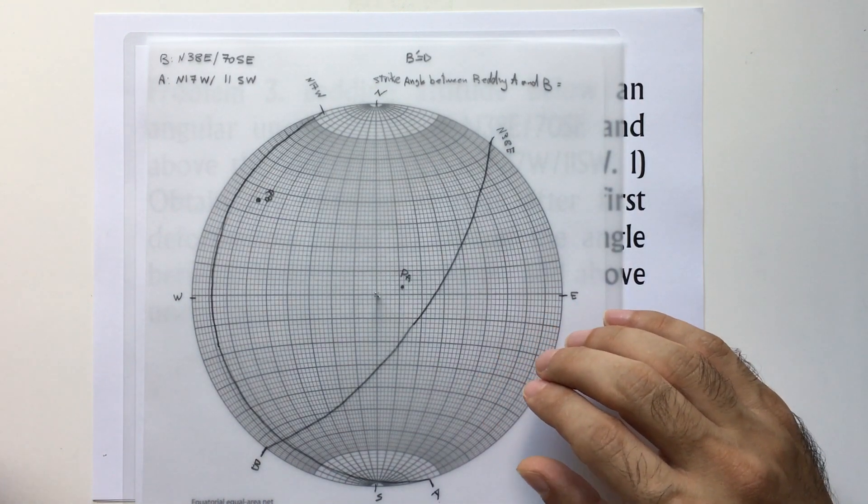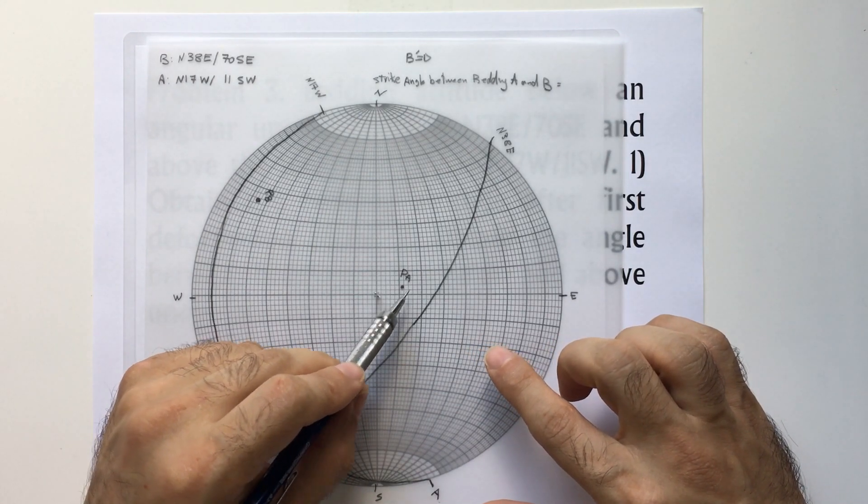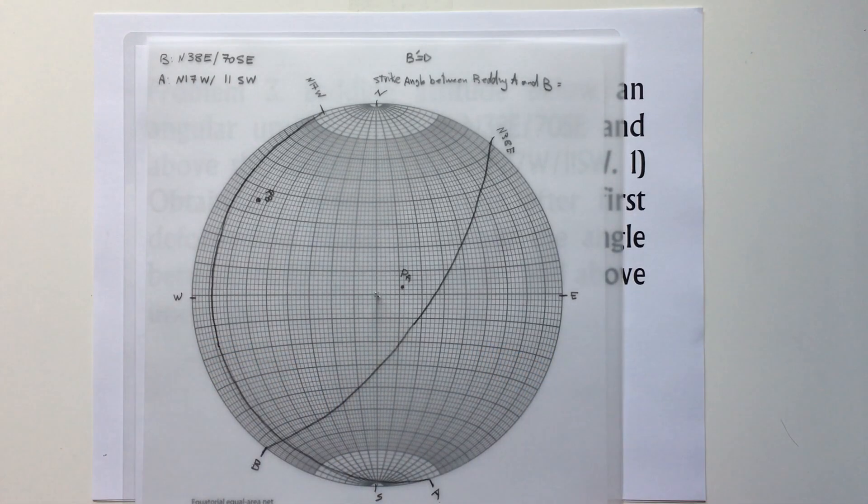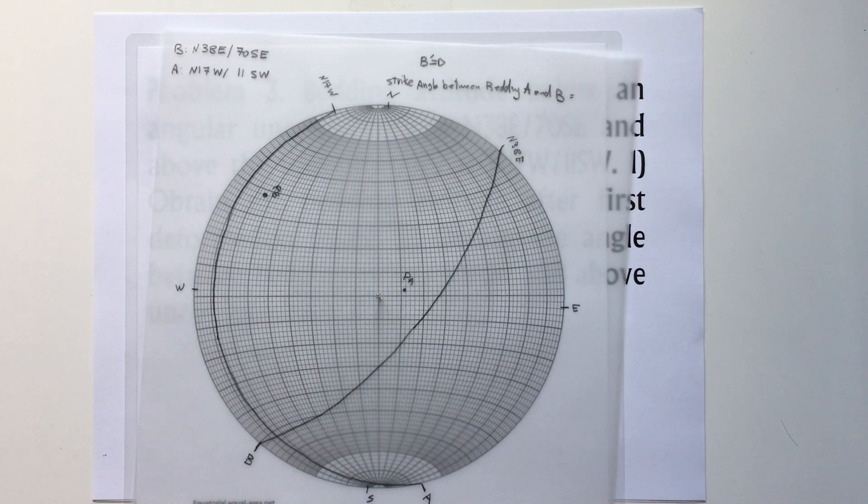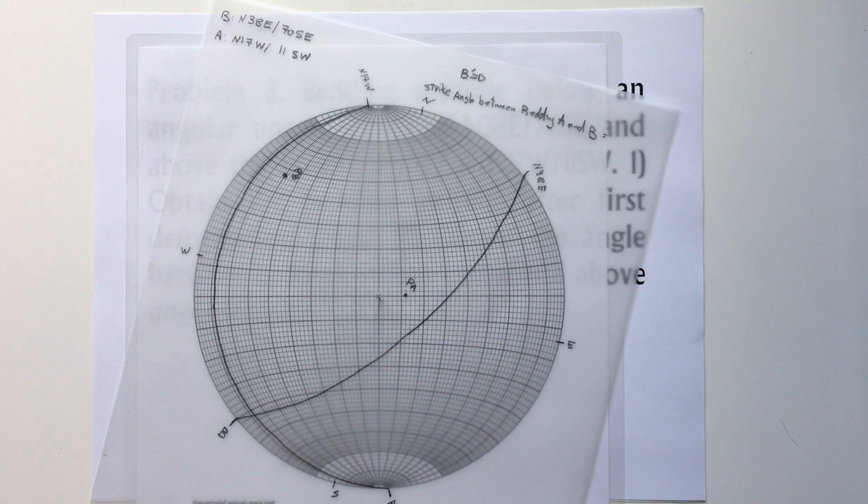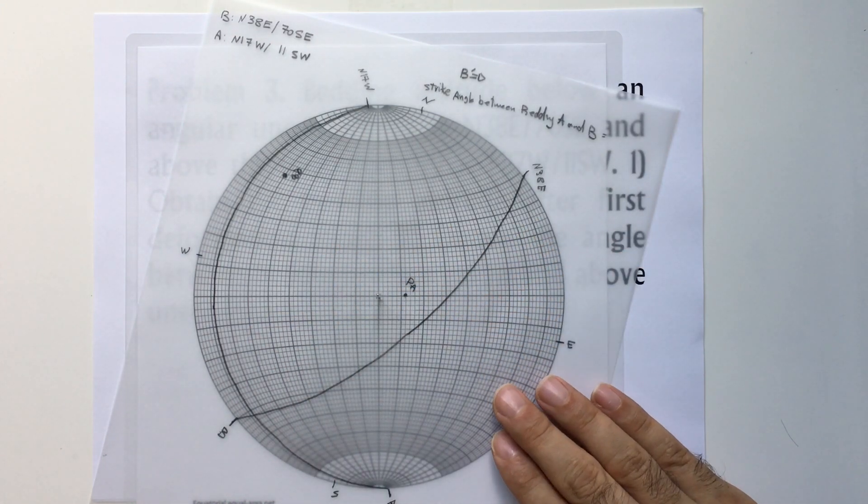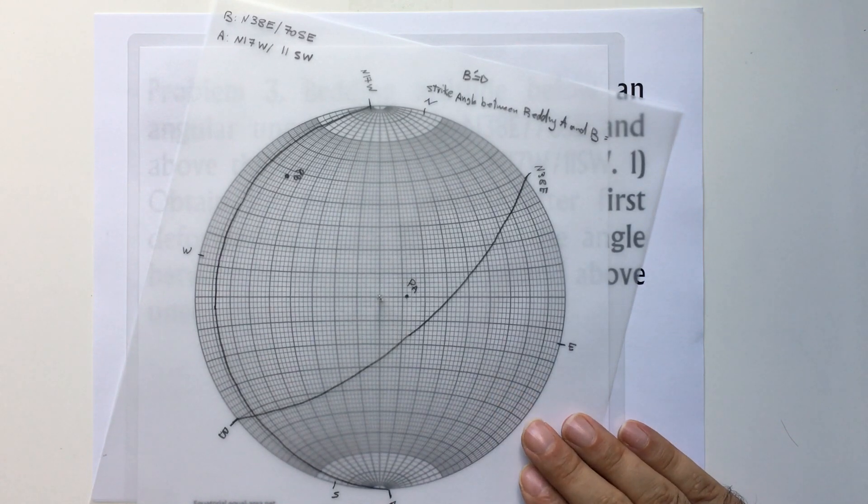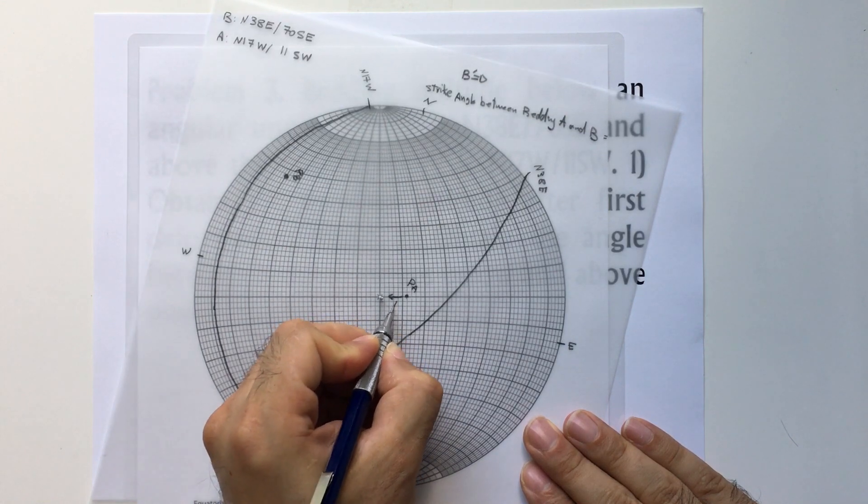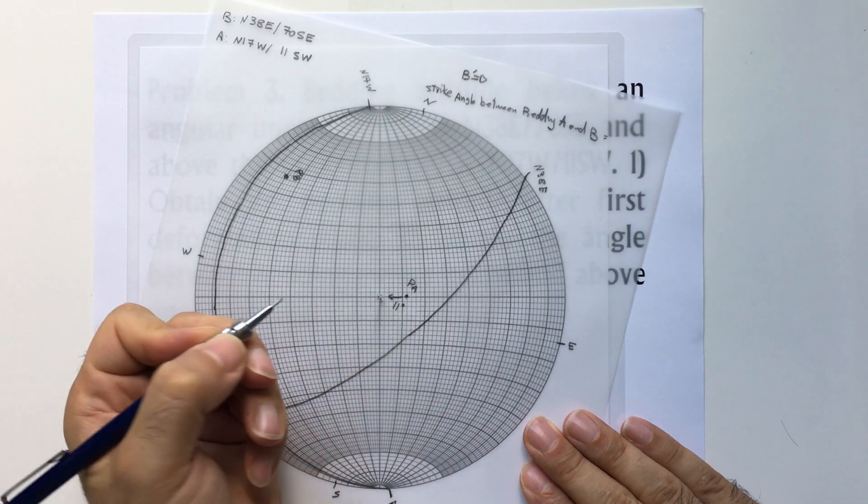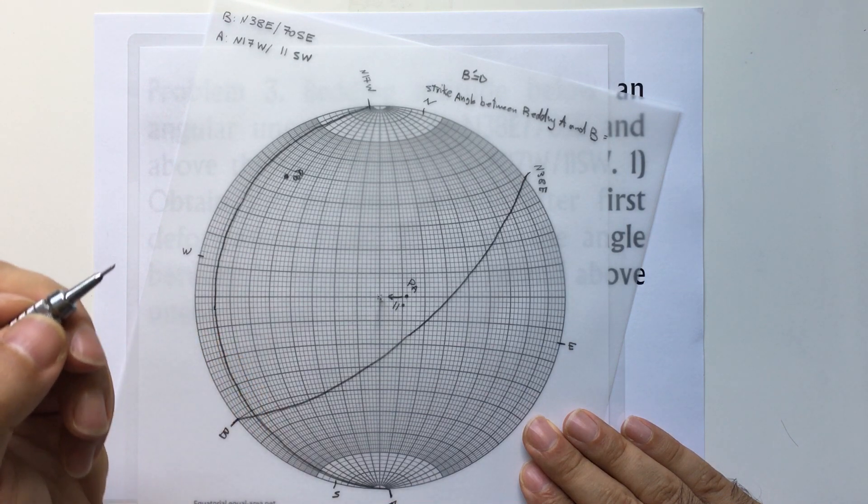So we're going to move the pole of A, the above bedding, to the center. I will rotate my vellum paper until the pole is going to sit along the north-east side, along the west-east line, because I'm able to count the angle. This is 11 degrees, and I need to move the pole of the bedding.